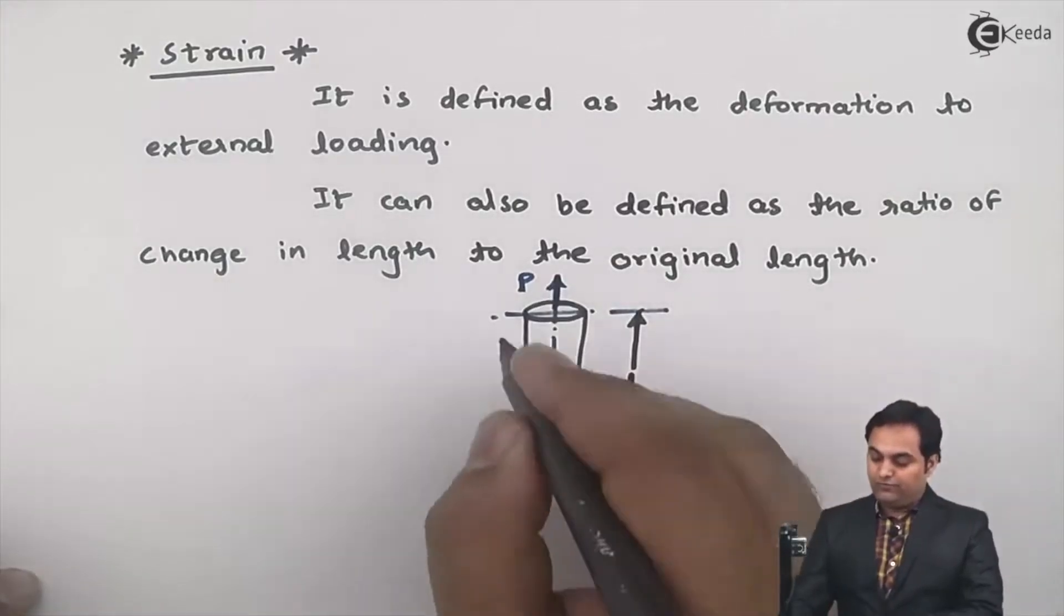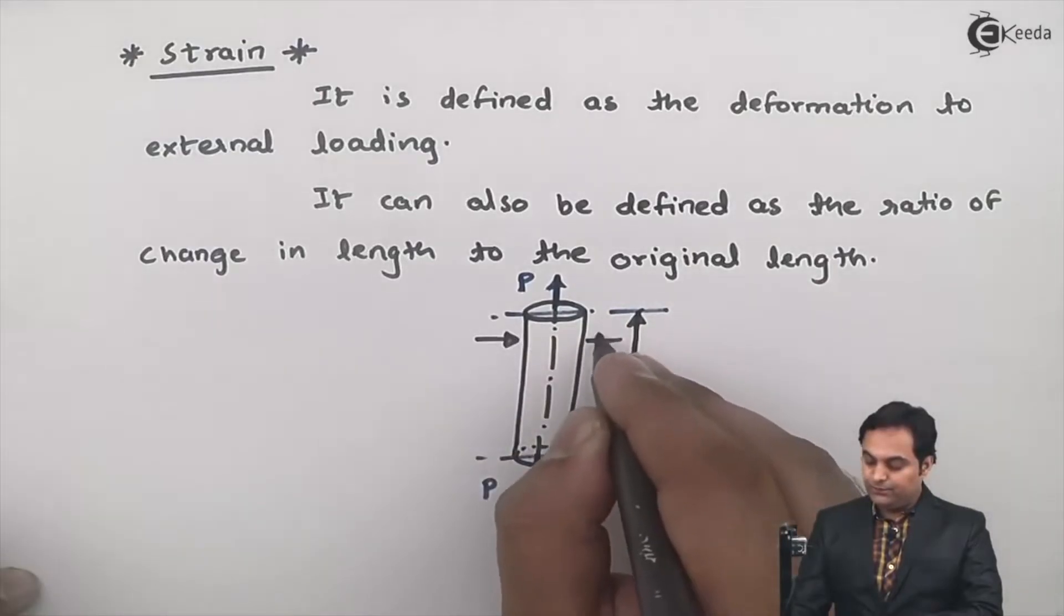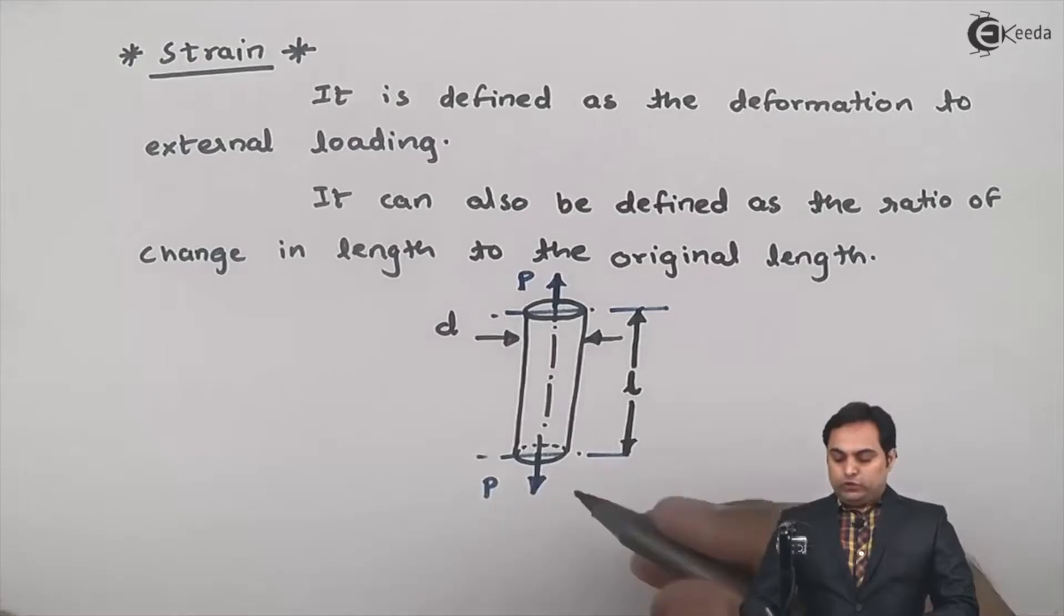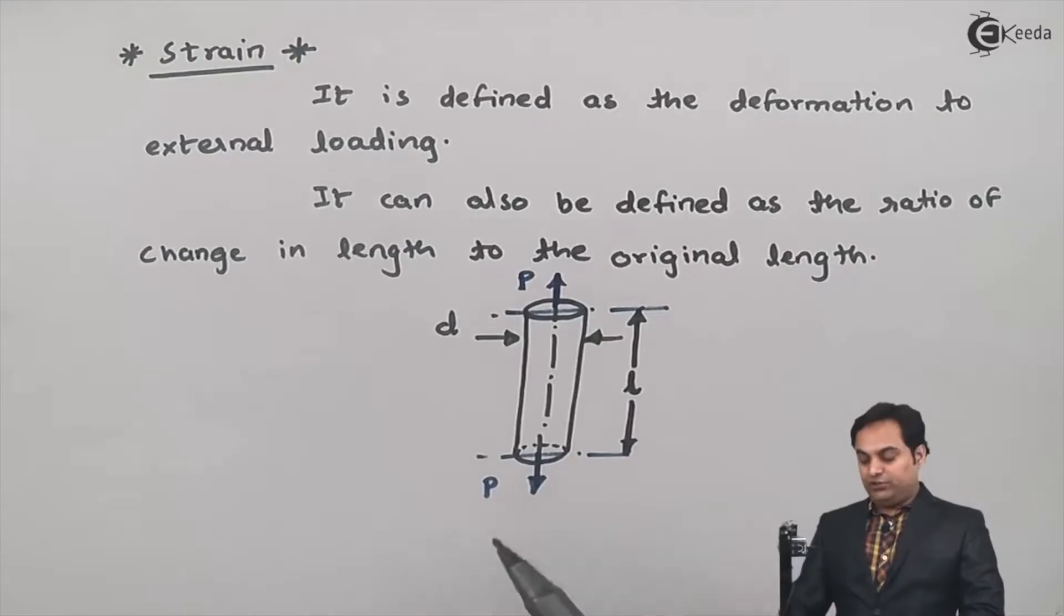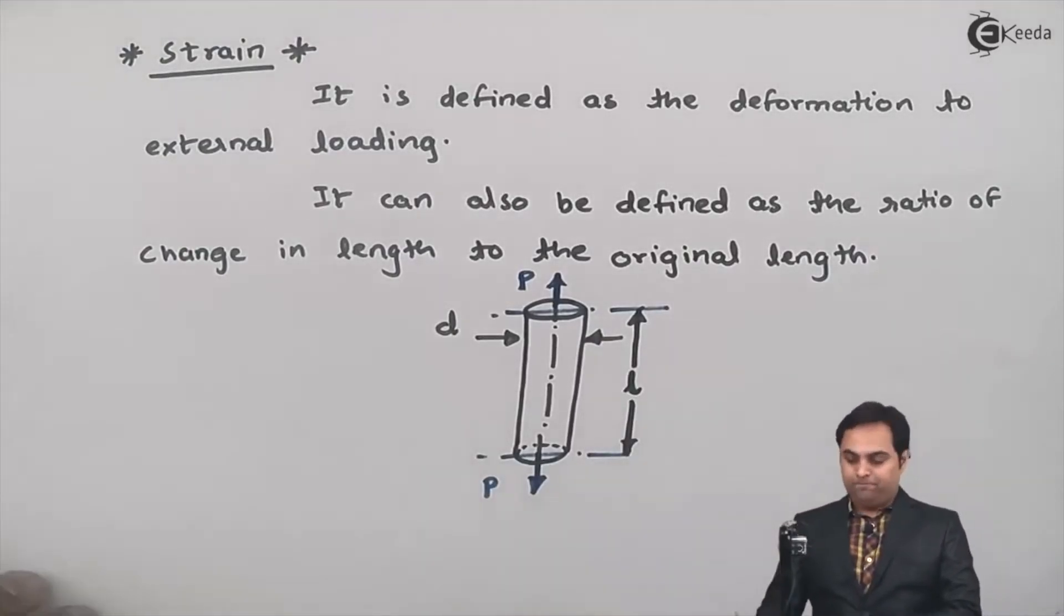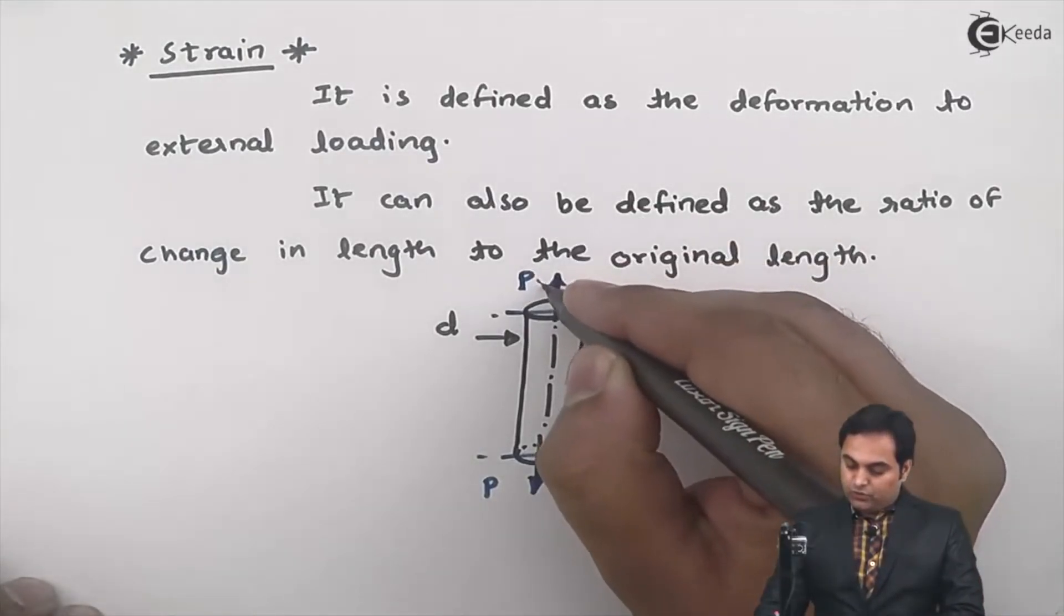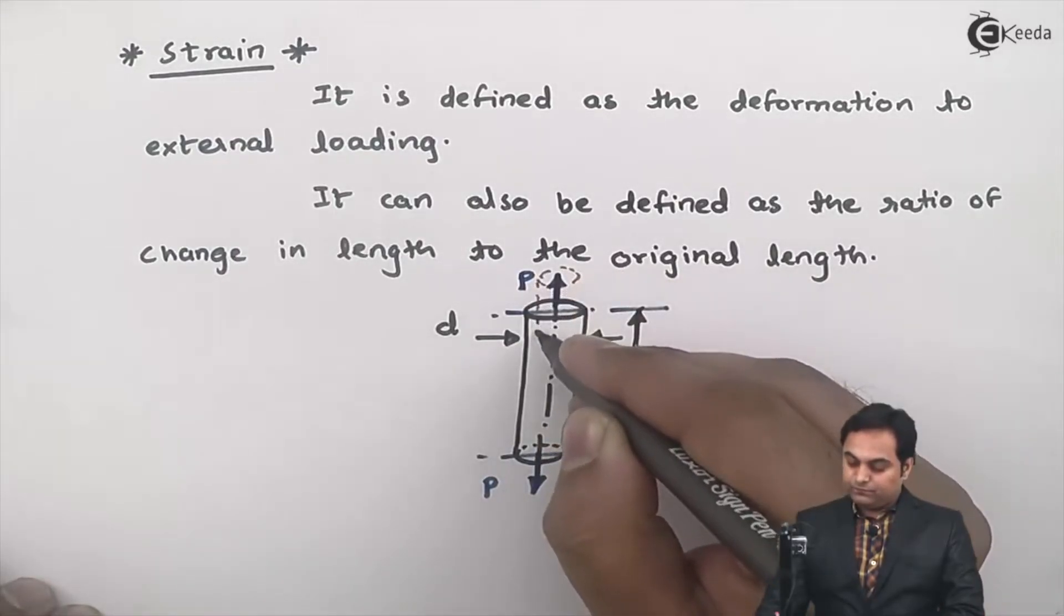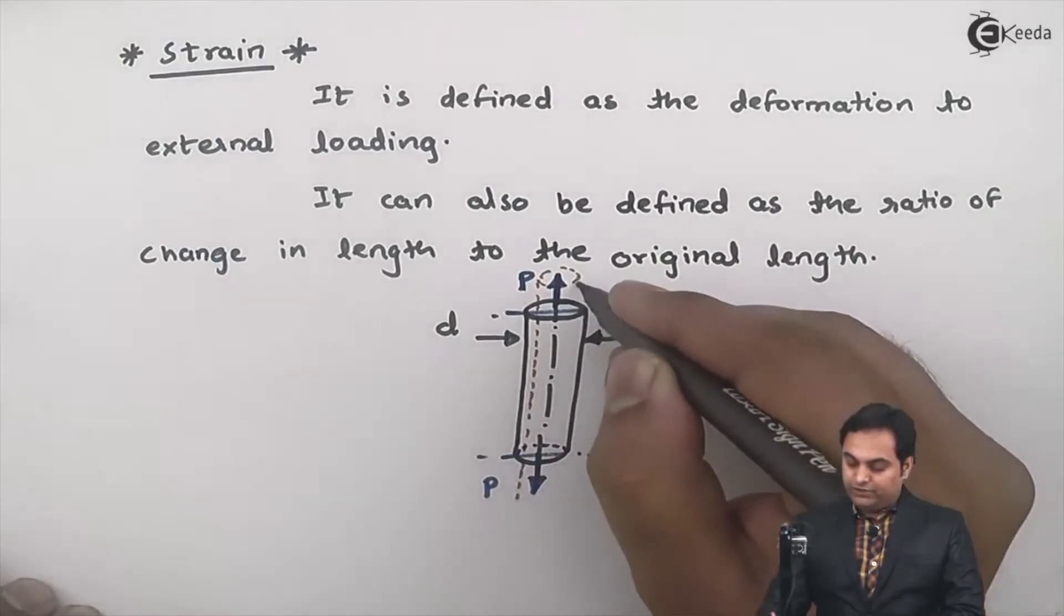Under the action of this load P, if I denote the diameter also as small d, when we are applying a pull type of load, this pulling force will try to pull this rod. Because of this pulling rotation, the rod diameter will go on decreasing and the length of the rod will go on increasing.